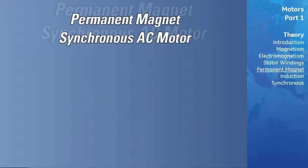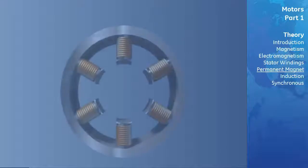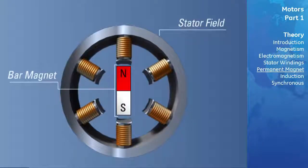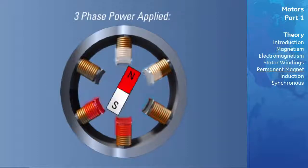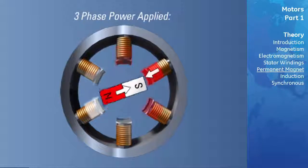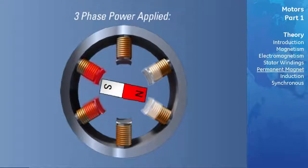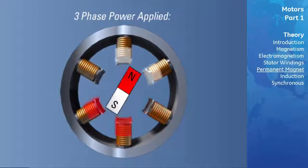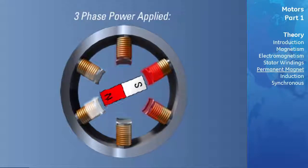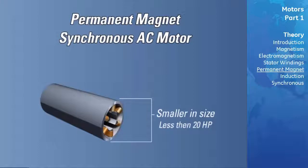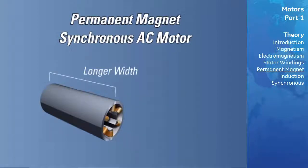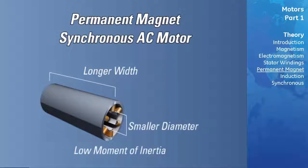Now let's take a look at the operation of a permanent magnet synchronous AC motor. First, we will mount a bar magnet in the center of the stator such that it can rotate freely about its own axis. Then we will apply three-phase power to the stator, and note that the stator's rotating magnetic field will form. Opposite poles of the bar magnet and stator field will attract each other, resulting in the production of torque, which will cause the bar magnet to rotate at the same speed as the stator field. Permanent magnet synchronous AC motors tend to be very small — from fractional horsepower to less than 20 horsepower — with a long, small-diameter profile, resulting in a very low moment of inertia, making them ideal for high-speed positioning applications such as motion controllers.